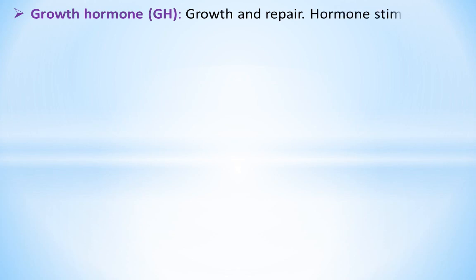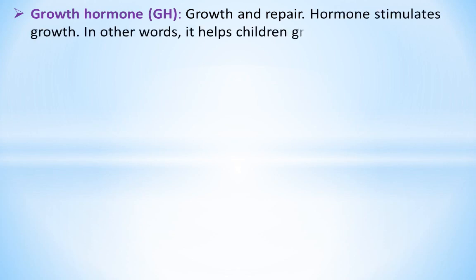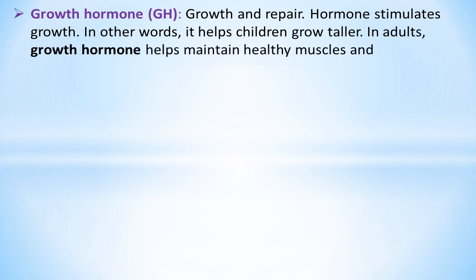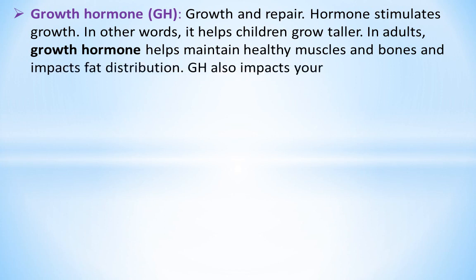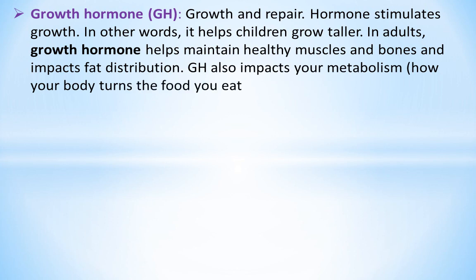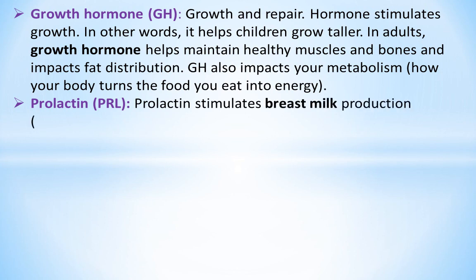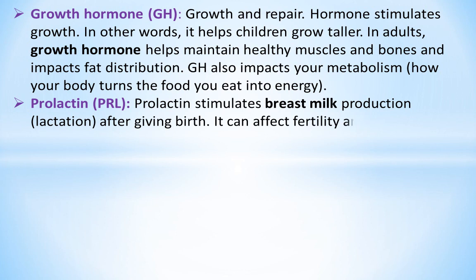Growth hormone (GH) stimulates growth and repair. It helps children grow taller. In adults, growth hormone helps maintain healthy muscles and bones and impacts fat distribution. GH also impacts your metabolism — how your body turns the food you eat into energy. Prolactin (PRL) stimulates breast milk production after giving birth and can affect fertility and sexual functions in adults.